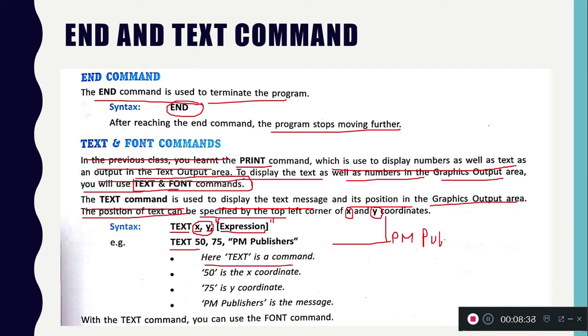Here, TEXT is the command. 50 is the X coordinate, 75 is the Y coordinate, and 'PM Publisher' is the message to be displayed on the output screen.